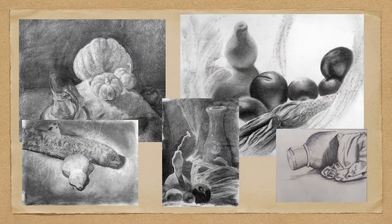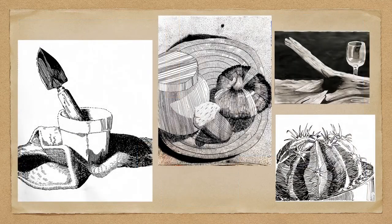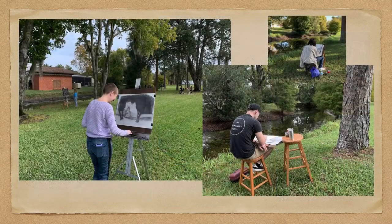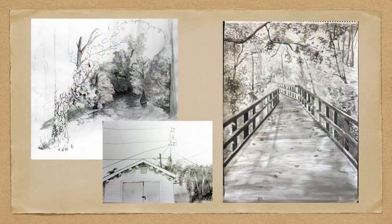We also use a variety of materials like graphite, charcoal, pen and ink, ink wash, and conté crayon. When weather is permitting, we go outside. Outside, students could be drawing with pen and ink, charcoal, or graphite — it depends on where we are in the process, but the students like to get outside once in a while.